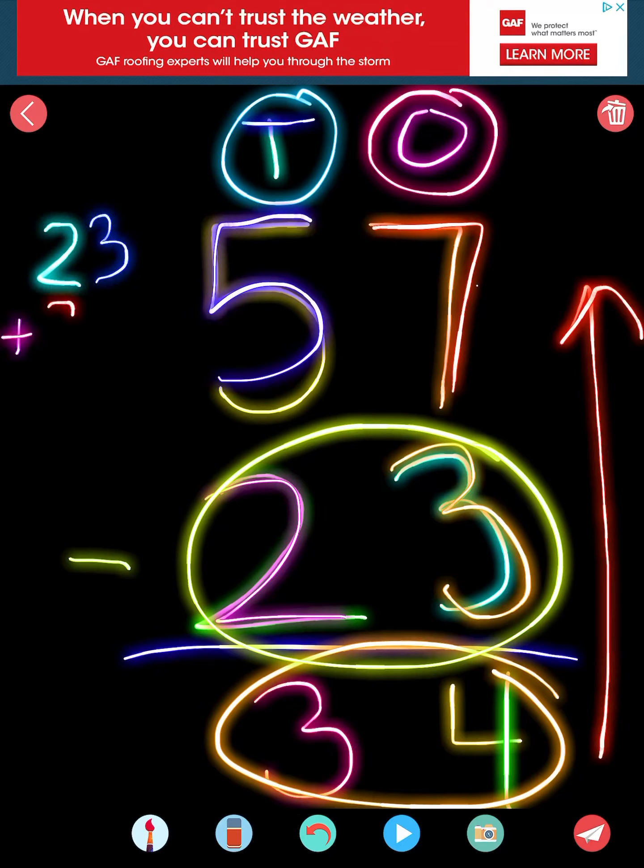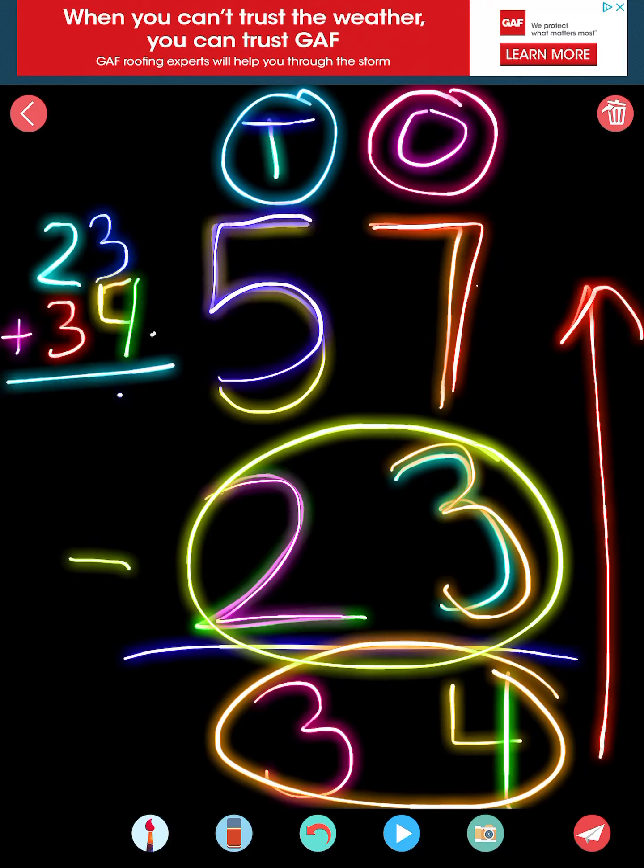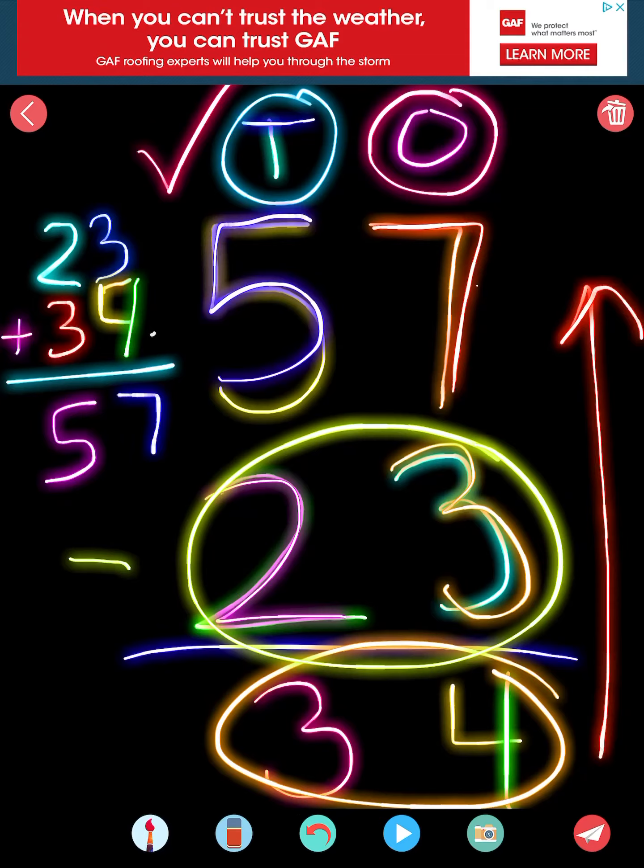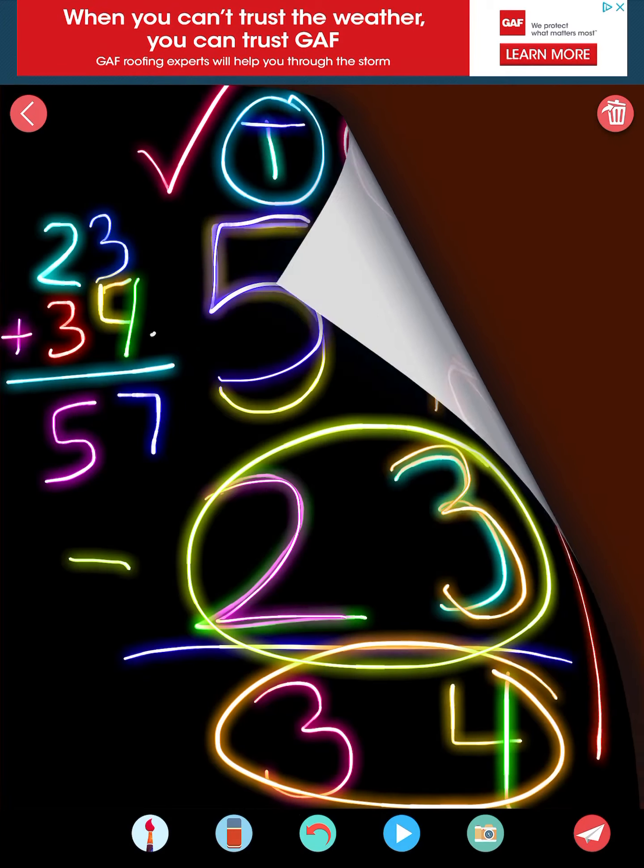Let me show you. 23 plus 34. 4 plus 3 is 7. 3 plus 2 is 5. So yep, it checks out. That's the way to check your math. All right, let's do one together now.